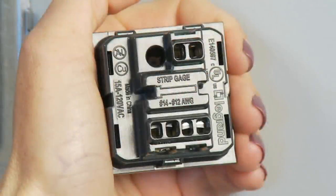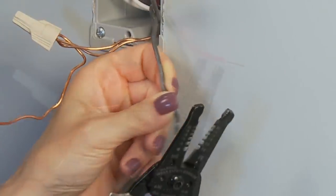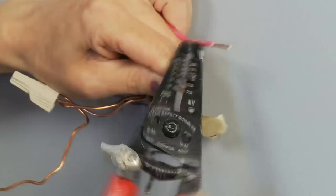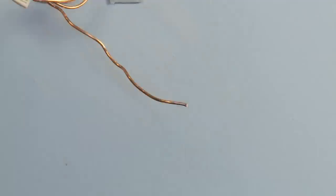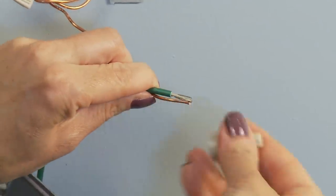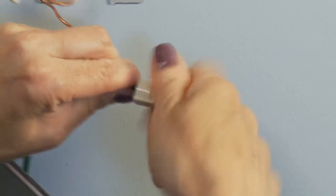Consult the wire strip gauge located on the back of the device and strip all wires to the appropriate length. Attach the ground wire on the frame to the bare ground wire in the wall box.